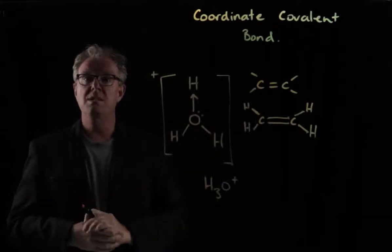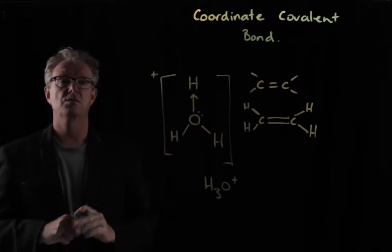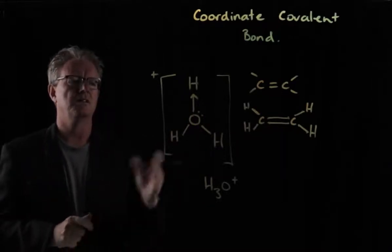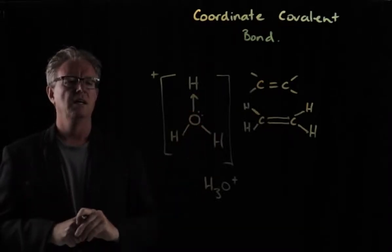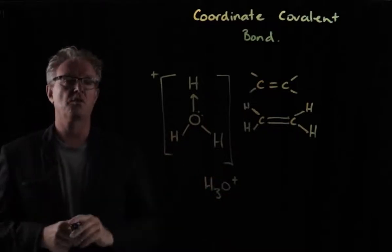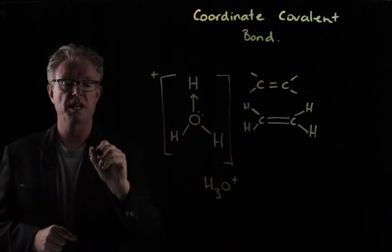So what's another example of a molecule slash ion? Because this is an ion, it's a molecule and it has a charge to it. So we can call it an ion as well. What other ones show this concept of coordinate covalent bond? Well, let's check out ammonia.